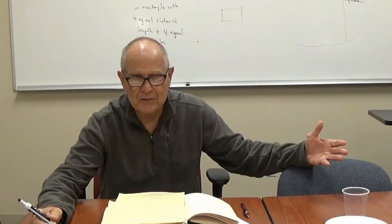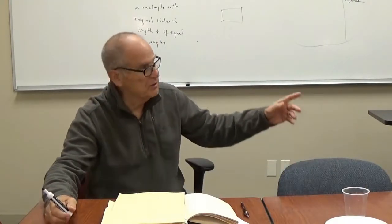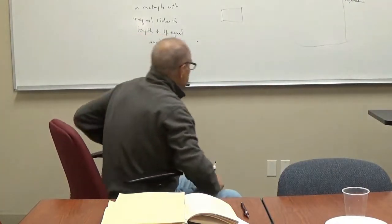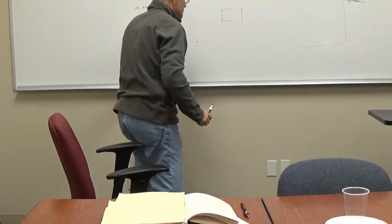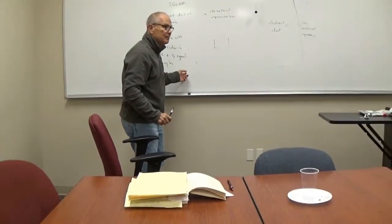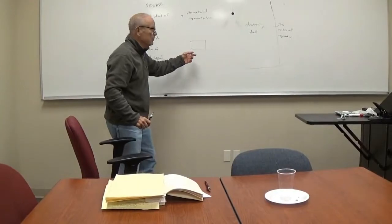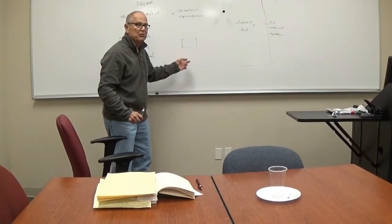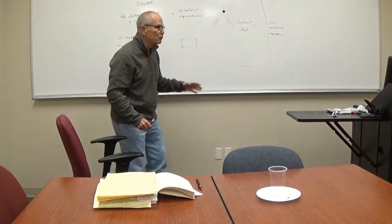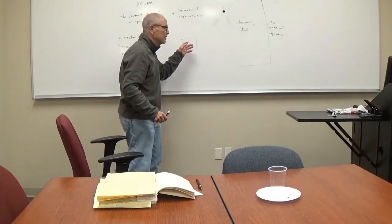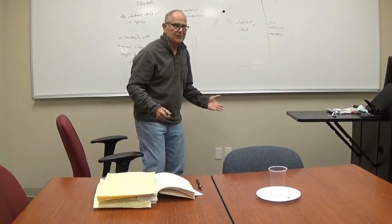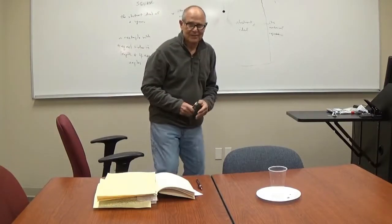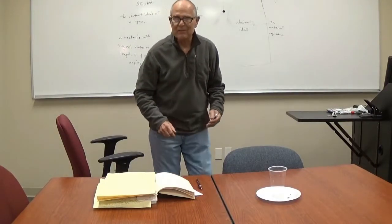Why did they emphasize these abstract ideals? One, because the abstract ideals are perfect. This is a perfect square. But concrete squares, to varying degrees, are imperfect. If I had a ruler I could do a better job, but even with a ruler they would never be perfect.